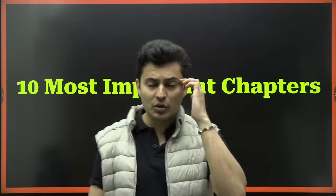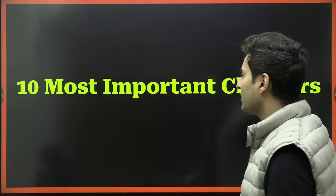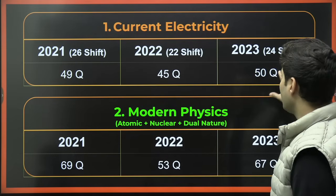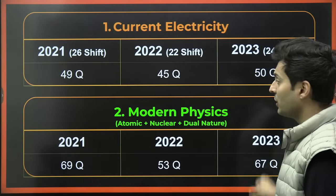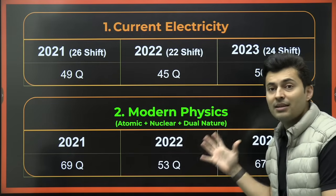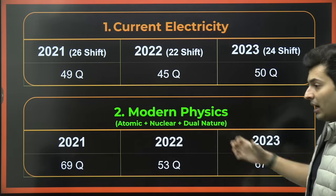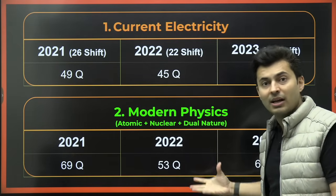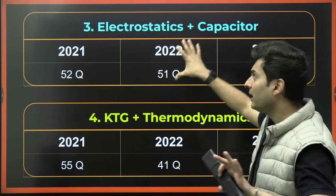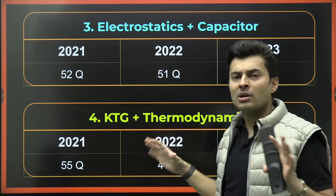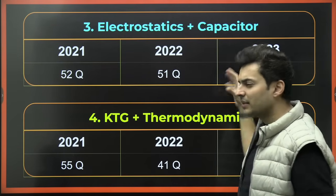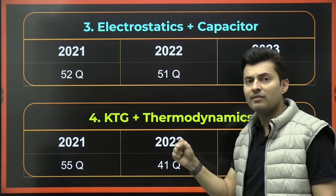Now, which are the most important chapters to focus on? Current electricity is very very important — 45 questions in 2022, 20 in 2023 (note the variation), and 50 in another session. Modern physics as a whole unit saw 69, 53, and 67 questions — these are heavyweight chapters. If you add semiconductors, you absolutely must complete these topics. Electrostatics is very important; coupled with capacitors it becomes huge, but even electrostatics and Gauss's law alone form a very heavyweight chapter.